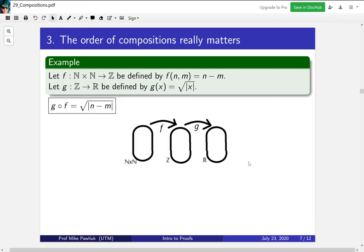Let's take a look at what happens when we take the composition in two different orders. The first one is g composed with f, which looks like take the square root of the absolute value of the difference. First you take the difference and then you plug that into g(x).